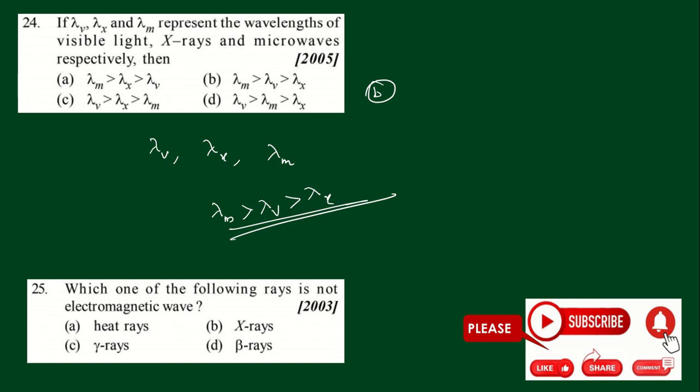Question 25: Which one of the following rays is not an electromagnetic wave? Heat rays are infrared, x-rays and gamma rays we already know. Beta rays are electrons or positron particles from the nucleus. So we can take D, the fourth option as the answer.